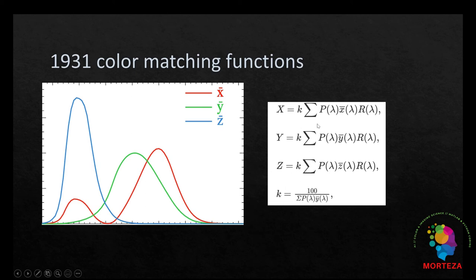Here, where P is the spectral power distribution of the light source, X, Y, Z bar show the color matching functions of the 1931 standard observer, and R shows the reflectance spectra of the stimulus. K is also a normalizing factor, so that light source would have the luminous factor of 100.